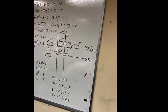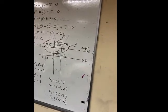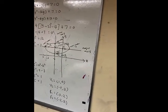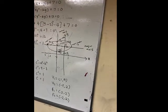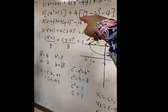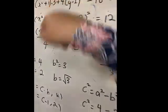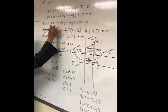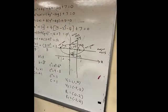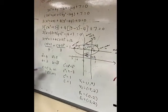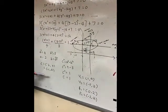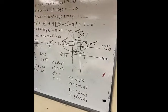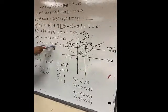For the center, we can get from the general form ellipse. We know the center is (h, k), and we get (-1, 2), which is from here h and here k.